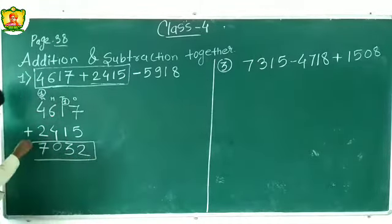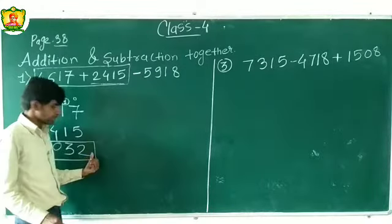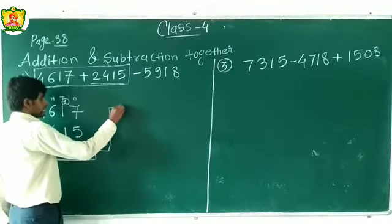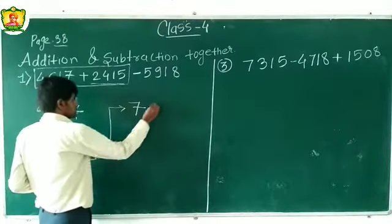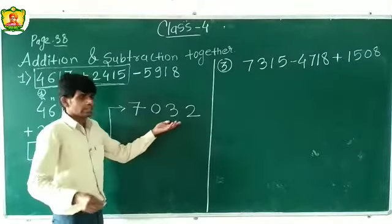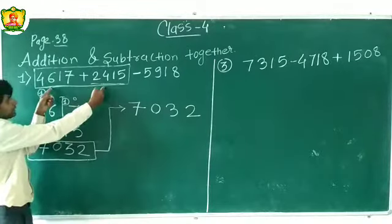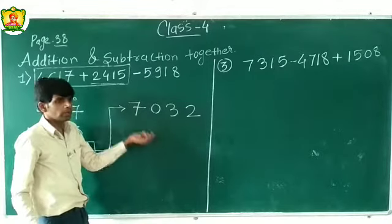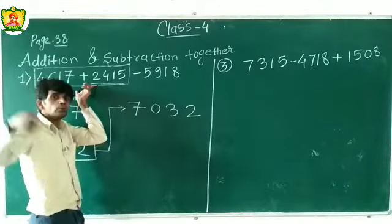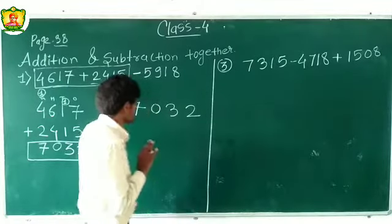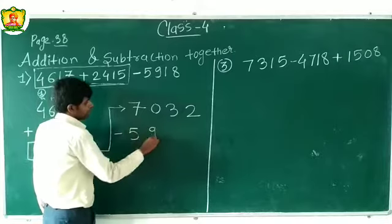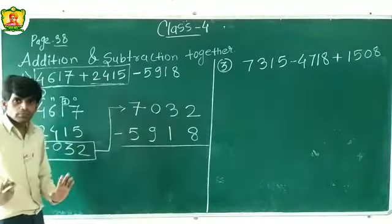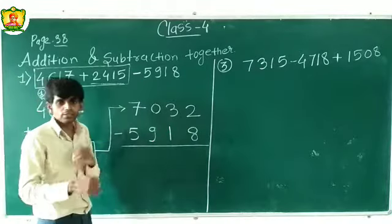This is the resultant — the sum of those two numbers is 7032. Now in the next step, I will write this number and subtract 5918 from it. So the two numbers are first added, then from that answer we subtract the third number step by step.